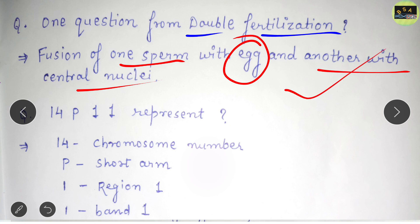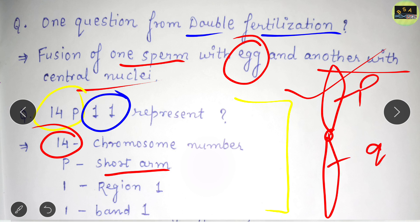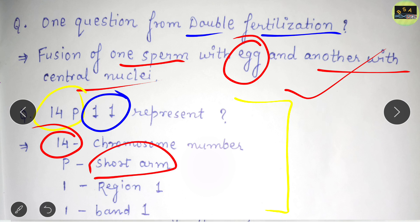Another easy question from the evening shift asks what '14p11' represents. The number 14 is the chromosome number. 'p' represents the short arm of the chromosome, while 'q' is the long arm. The first '1' represents region one of that chromosome, and the second '1' represents band one of that region. This is the correct arrangement — a very simple question.